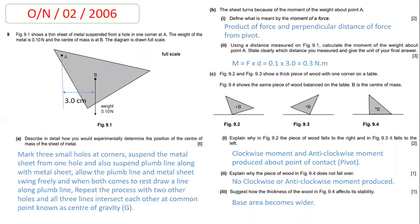In figure 9.4, the piece of wood is stable because no clockwise or anticlockwise moment is produced about the pivot. For part 3, the examiner asks how the thickness of the wood in figure 9.4 affects its stability. The base area becomes wider, and for stability there are two conditions: the center of gravity must be as low as possible, and the base area must be wider.